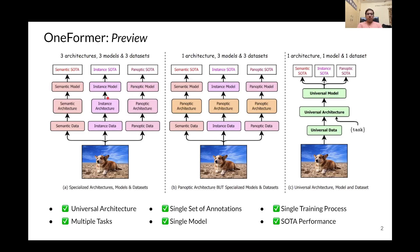OneFormer is a multi-task universal image segmentation framework that is able to achieve state-of-the-art performance on each of the three image segmentation tasks, which are semantic segmentation, instance segmentation, and panoptic segmentation, all with a single task-conditioned universal model.